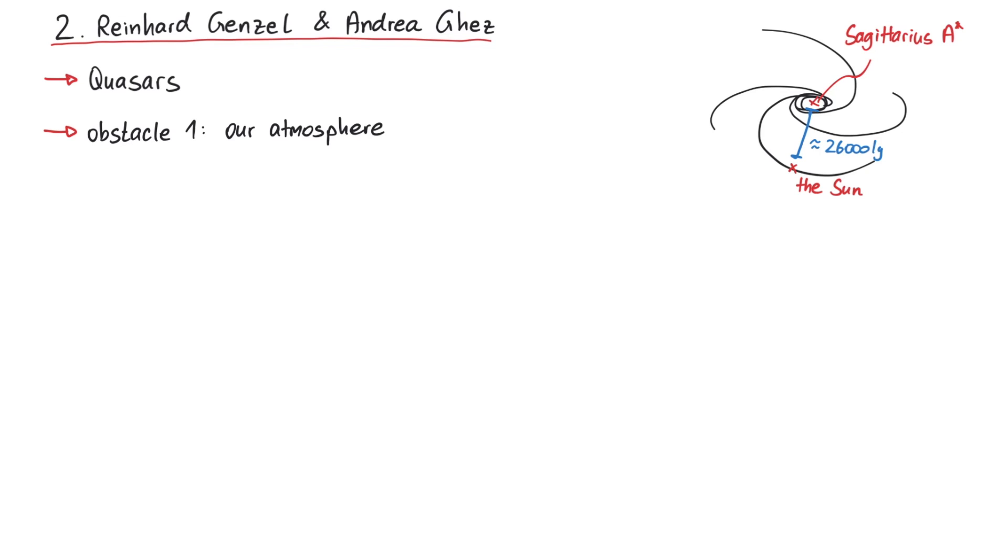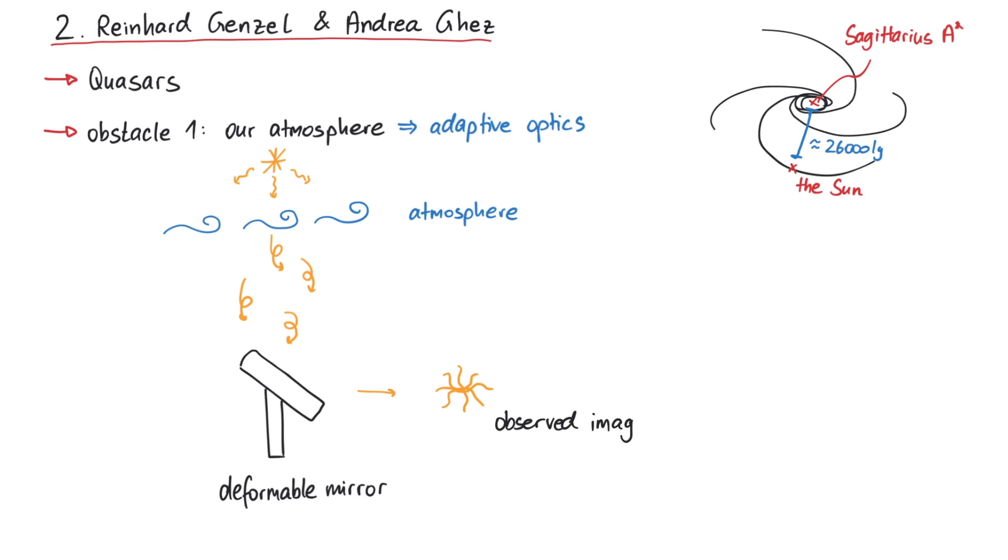In order to compensate for this effect, both Reinhard Genzel and Andrea Ghez used a technique called adaptive optics. It works like this: by using a special mirror, you can deform the mirror surface in just the right way to cancel out the interfering effects of our atmosphere. In order to know how to deform the mirror, we can point a laser up in the sky and let a computer adjust the mirror until the recorded image of the laser light is free of distortions. And since both our laser light and the distant star are affected by this same atmosphere, we can now also observe the star without interference.